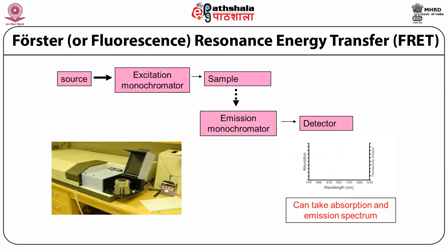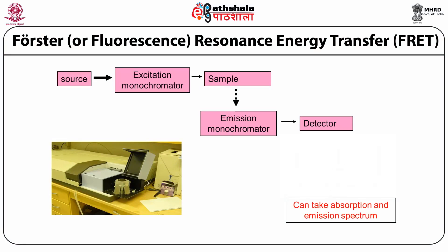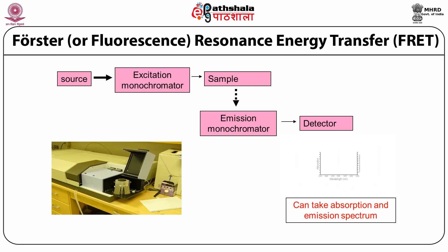We discuss fluorescence instrumentation. A simple diagram shows the fluorescence instrument having a source of light, then an excitation monochromator which helps to excite the light, then it falls to the sample, then the emission monochromator which perceives the emission, and finally a detector which detects the signal.